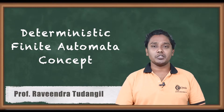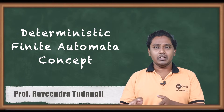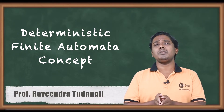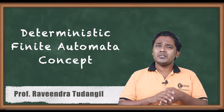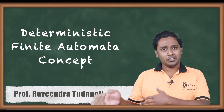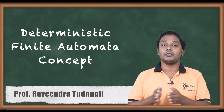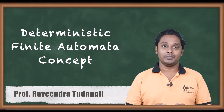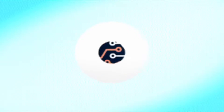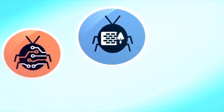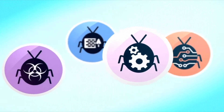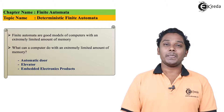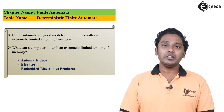What is Deterministic Finite Automata? It is a mathematical model having very restricted memory. With this restricted memory, there are various real-world embedded systems which are examples of DFA. In the presentation I have listed down three of them. Let's see them one by one — starting with an automatic door.